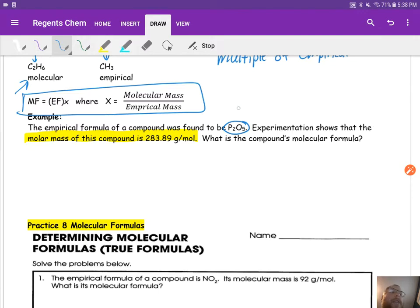Now, they could give you the empirical formula directly like this example has, or they could make it a little bit longer, and they could give you percentages, and you have to calculate the empirical formula, then figure out what the molecular formula is from that. We're going to take it step by step. You'll see practice with all of them.